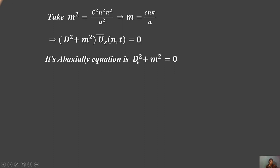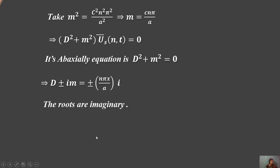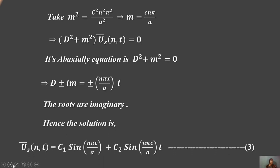The auxiliary equation is r² + m² = 0, giving r = ±mi. Since the roots are imaginary, the general solution is: Uˢ(n,t) = C₁·cos(nπct/a) + C₂·sin(nπct/a). This is Equation 3.